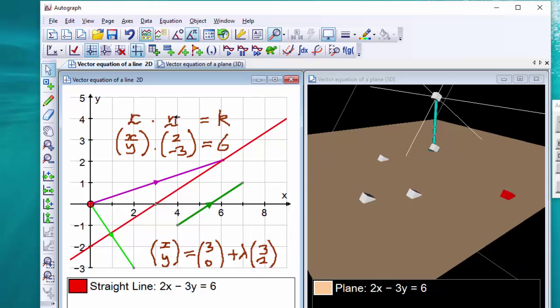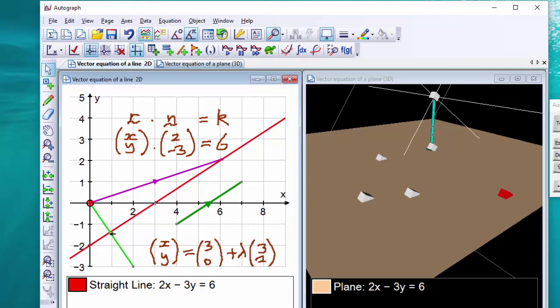The other version of the dot product, of course, is this length times this length times the cosine of the angle between them. Well, this length times the cosine of this angle is this distance here, which is constant. Doesn't matter where this is, you get the same answer. So that's a very nice way of showing that this is indeed a vector form for that straight line.